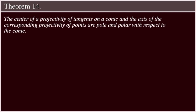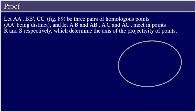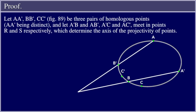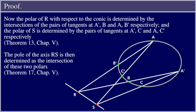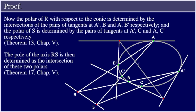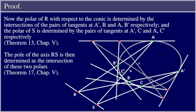Theorem 14: The center of a projectivity of tangents on a conic and the axis of the corresponding projectivity of points are pole and polar with respect to the conic. Proof: Let a, a'; b, b'; c, c' (Figure 89) be three pairs of homologous points, a, a' being distinct, and let a'b and ab', a'c and ac' meet in points r and s respectively, which determine the axis of the projectivity of points. Now the polar of r with respect to the conic is determined by the intersections of the pairs of tangents at a', b and a, b' respectively, and the polar of s is determined by the pairs of tangents at a', c and a, c' respectively.